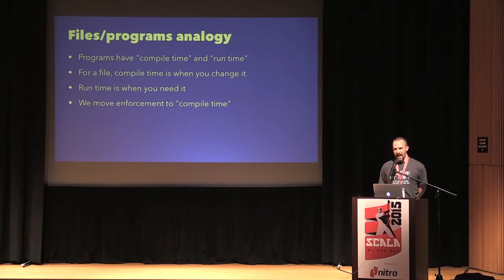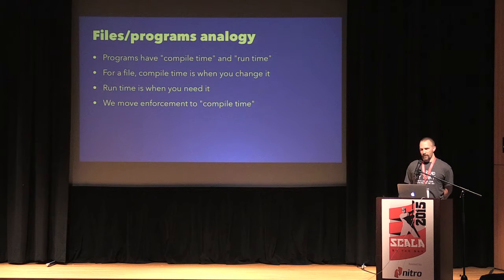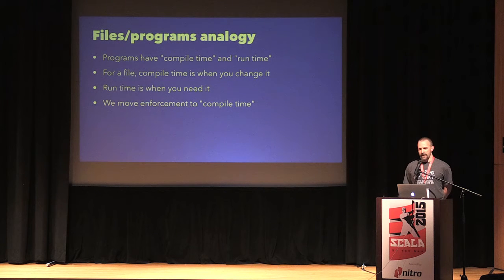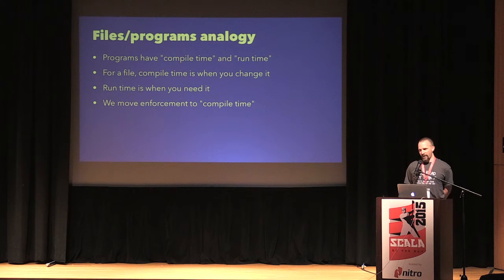There's a persistent analogy that works really well: compile time, run time. Types are the things we check at compile time, then we run it and things happen. Well, there's a kind of compile time for files and a run time for files. Compile time is when you try to change it; run time is when you need it. Right now we effectively defer every integrity check to the time when you need it. I'm saying we can do it when we change it, so the consumer doesn't have to double-check or just crash horribly if it's not right. If it says it's an XML file, it should be an XML file — you can know it 100%. It's easy to enforce by never committing a change to an XML file that doesn't produce another XML file.